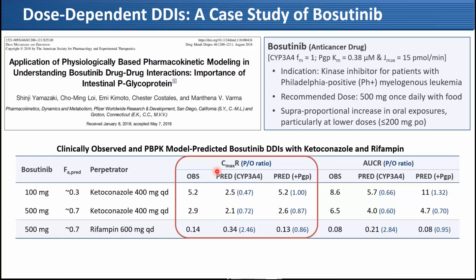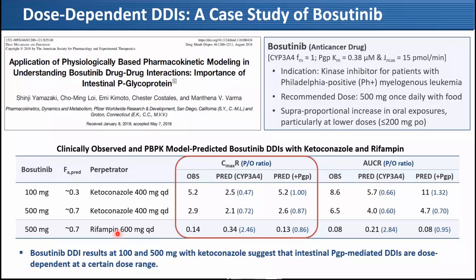When we accounted for CYP3A inhibition only, we significantly underpredicted DDI at 100 mg and slightly underpredicted the 500 mg data. When we incorporated P-gp inhibition in addition to CYP3A, we reasonably predicted DDI at both doses. For rifampin DDI, accounting for only CYP3A induction led to underprediction; incorporating P-gp induction allowed reasonable prediction. We don't have rifampin DDI data with ponatinib 100 mg, but the ketoconazole results suggest intestinal P-gp-mediated DDI is dose-dependent at certain dose ranges.